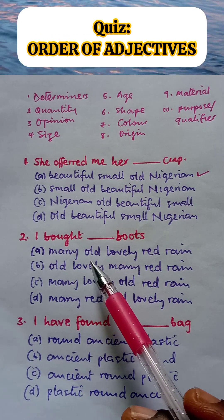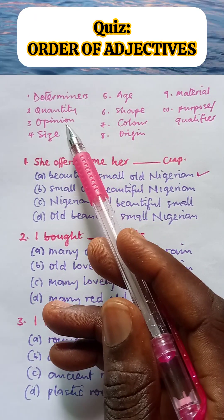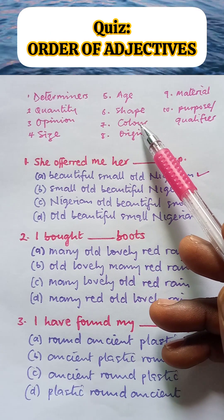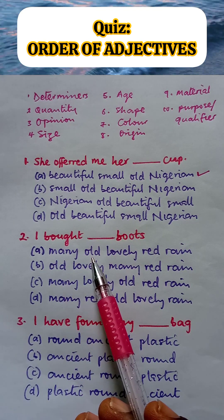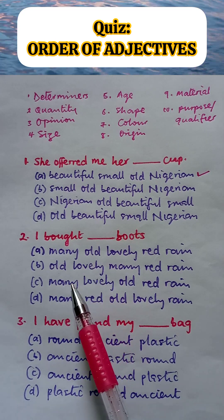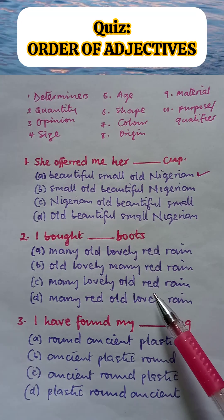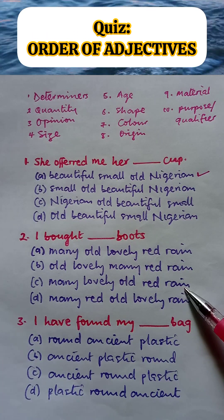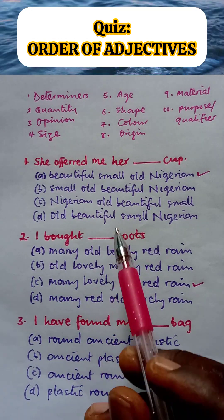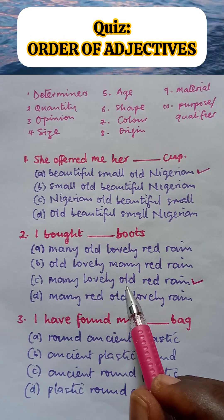From the arrangement, the order is: quantity first, then opinion, followed by age, then color, before qualifier. Looking at option A — quantity, age, opinion — this is wrong, opinion should come before age. Option B starts with age then opinion — no, opinion should come before age. Option C has many (quantity), lovely (opinion), old (age), red (color), rain (qualifier) — correct! Option D has many (quantity), then color — opinion should come before color, so option D is wrong. Therefore option C is the correct answer. The statement reads: I bought many lovely old red rain boots.